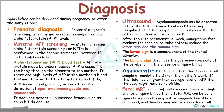Spina Bifida can be diagnosed during pregnancy or after the baby is born. In prenatal diagnosis, we use serum alpha-fetoprotein screening. Maternal serum alpha-fetoprotein screening for neural tube defects is performed in the second trimester of pregnancy, between 15 and 20 weeks gestation. Alpha-fetoprotein is a protein made by unborn babies that crosses the placenta into the mother's blood. If there are high levels of alpha-fetoprotein in the mother's blood, this might indicate that the baby has Spina Bifida. It is important to note that alpha-fetoprotein screening is primarily intended to detect open myelomeningocele and anencephalus, and does not reliably detect skin-covered lesions.